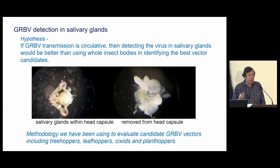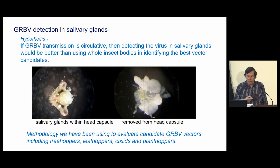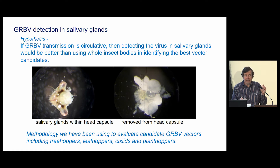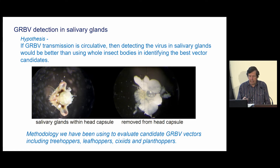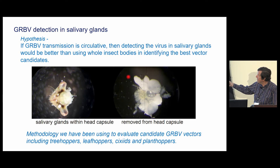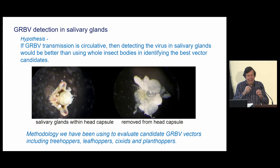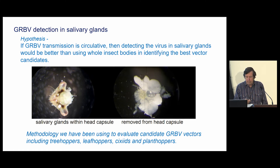We have been starting for several years to look at salivary glands, because we felt that if the insect was going to transmit the virus, it would have to be present in their salivary glands so they could inject the virus into the plant. It's very difficult to dissect salivary glands from a small insect, and we do this routinely from a lot of different vector species we're studying. Just to give you an idea of size — this is the salivary glands within the head of the insect — it's really tiny. You have to be very careful not to contaminate anything, so we don't pick up red blotch virus due to contamination; it's all done under a very sterile process.